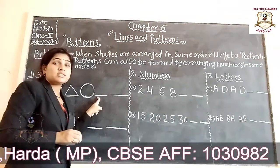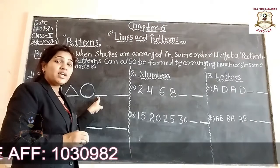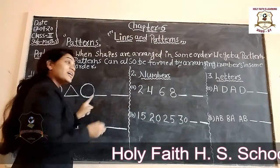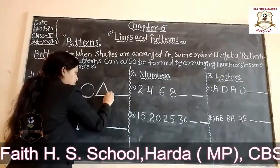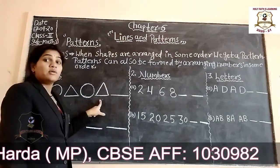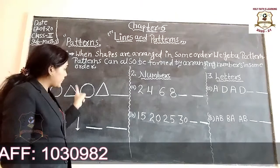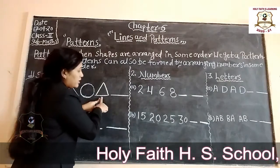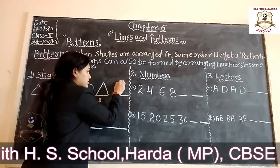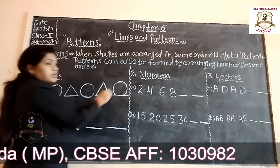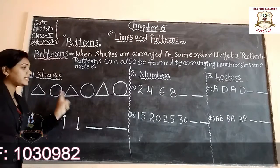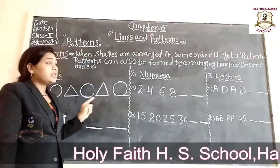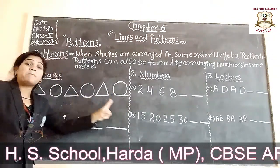So tell me students, what comes next? Yes — triangle, circle. Triangle, circle. So what comes next? Triangle. And after that? Circle. So triangle, triangle, triangle, circle — even this sequence forms a pattern.